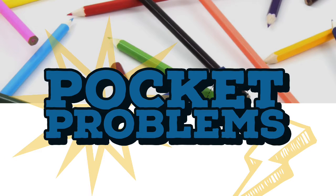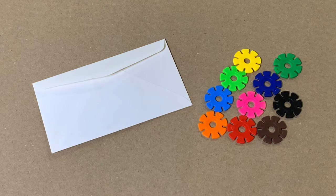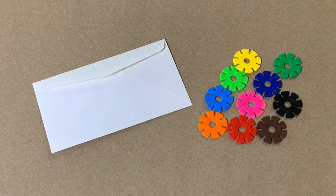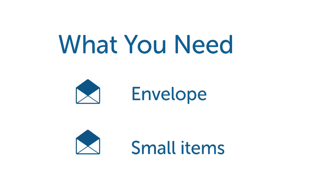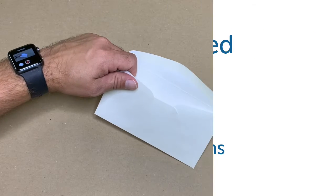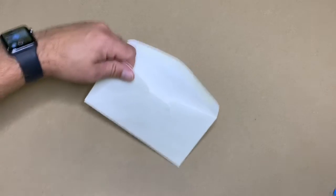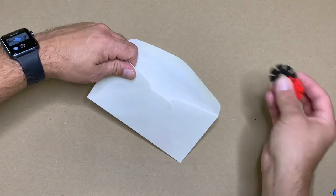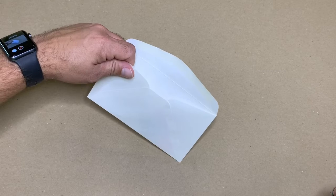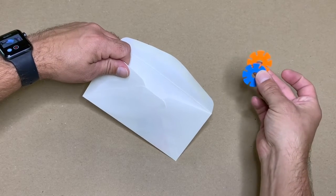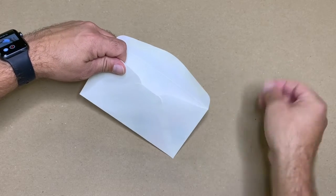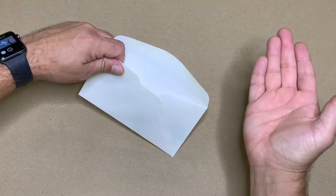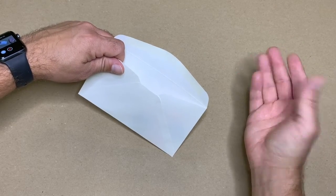Pocket problems. What you need: envelope and 10 small items. You can use items from your math toolbox. Count some of the items into your envelope: one, two, three. Then add two more items. How many does that make?